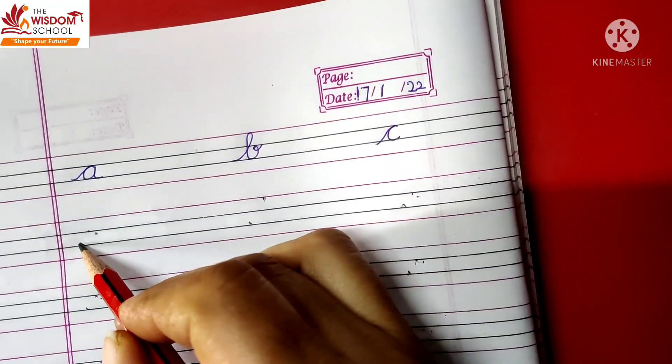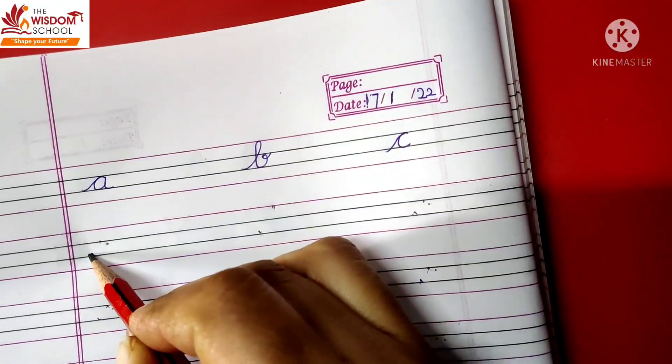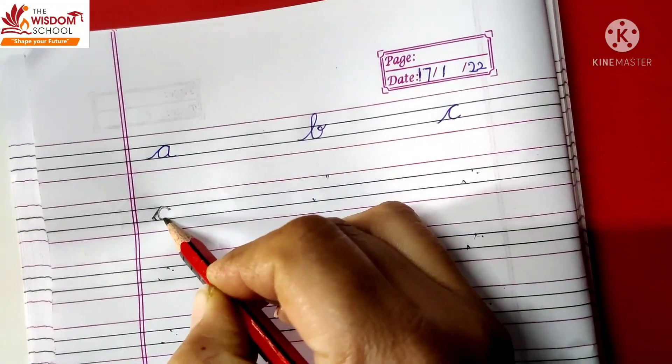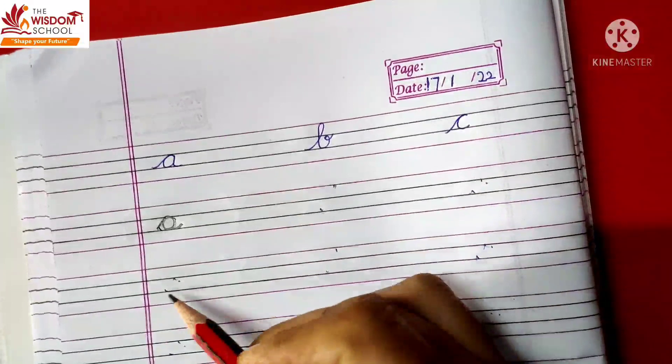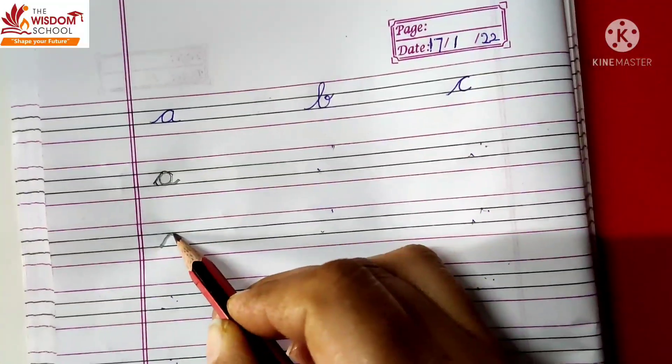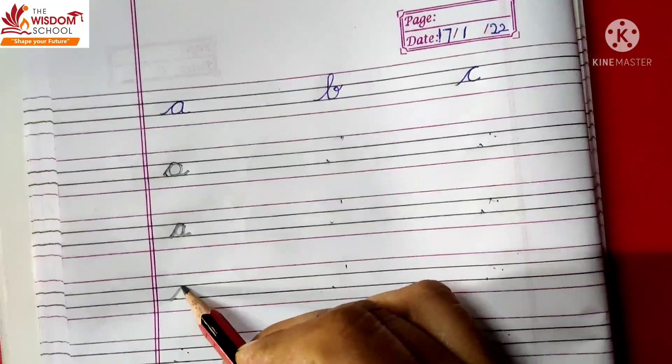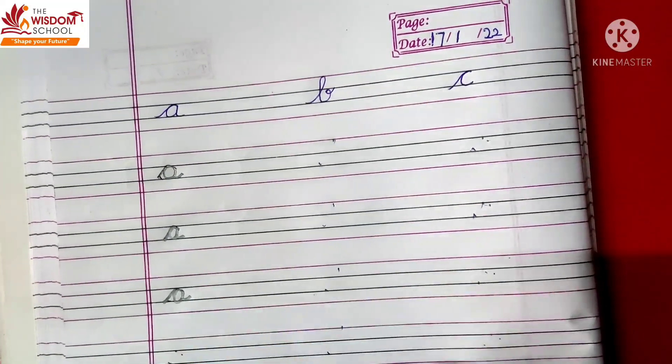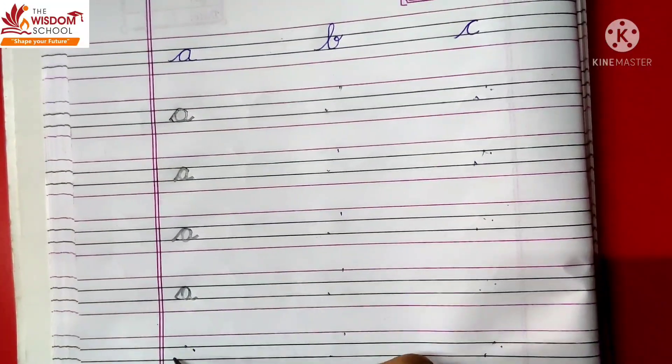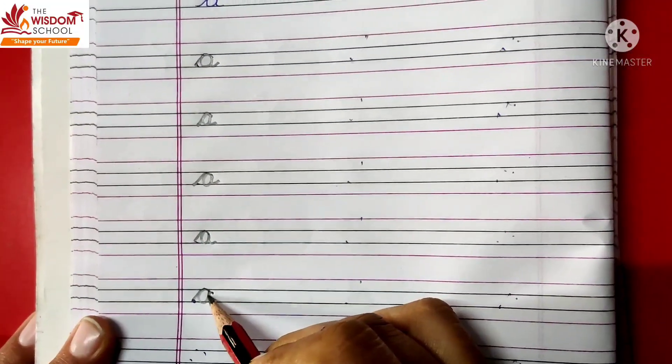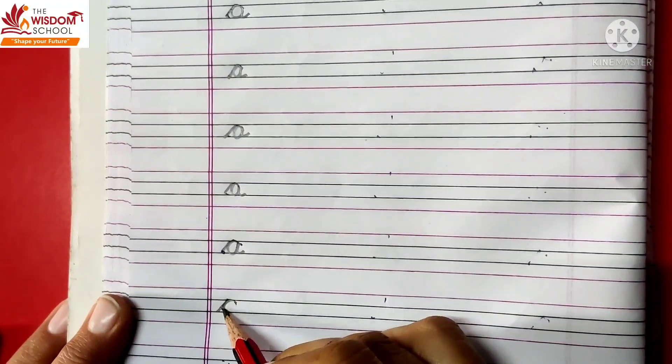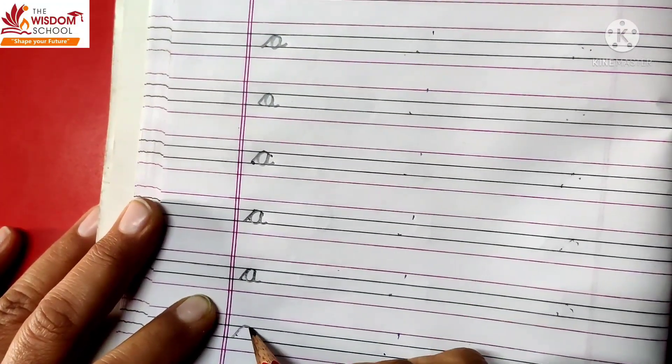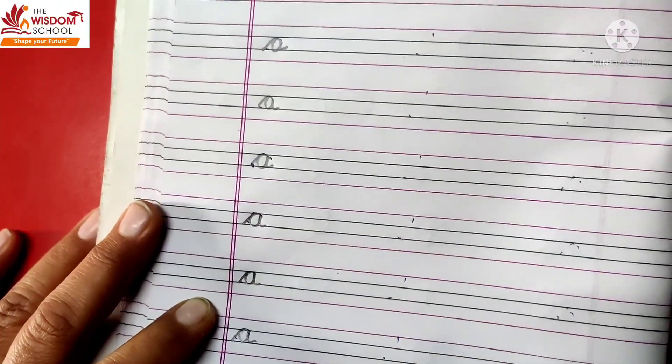Thik hai, kaunsa letter? Letter A, sound is A. Yahaan se start karo, aap isko neeche se, is dot par ao, aur isko achche curve, halka sa curve lekar ao, phir, aapne ek circle banana hai, achche, aur phir, isko neeche lekar, aur achche karna hai. This is what we have done. A apple. Look here, slanting line then a curve then a circle then a down. A apple. A apple. You have to practice, but when you start, see how to do it. A apple.